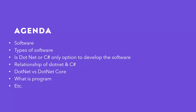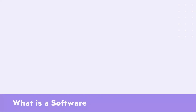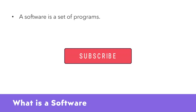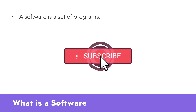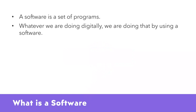Let's start the journey from what is software. If we talk about the definition, a software is a set of programs. This definition will make some sense only for experienced programmers or developers, but for freshers this can be a very confusing definition. So for those who do not know anything about programs or software, let's start everything from scratch. Whatever we are doing digitally, we are doing that by using a software.